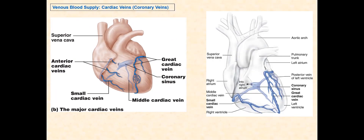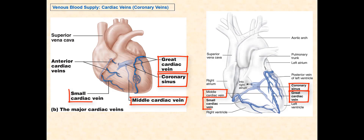Let us now discuss the venous blood supply and the coronary veins, which are also known as cardiac veins. The blood that circulates through these veins is deoxygenated. There are twice as many coronary veins as there are coronary arteries. The high carbon dioxide concentration in the blood is due to the carbon dioxide produced by the tissue cells of the wall of the heart. The coronary veins we will focus on are the coronary sinus, the great cardiac vein, the middle cardiac vein, the small cardiac vein, the anterior cardiac veins, and the posterior vein of the left ventricle. There are other coronary veins in addition to these six.